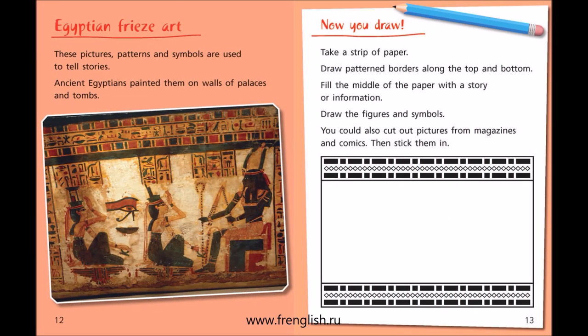Egyptian Frieze Art. These pictures, patterns and symbols are used to tell stories. Ancient Egyptians painted them on walls of palaces and tombs. Now you draw: take a strip of paper. Draw patterned borders along the top and bottom. Fill the middle of the paper with a story or information. Draw the figures and symbols. You could also cut out pictures from magazines and comics, then stick them in.